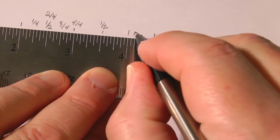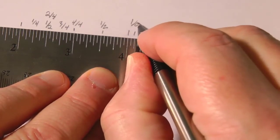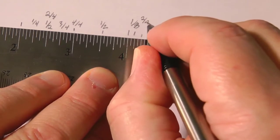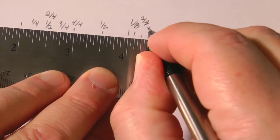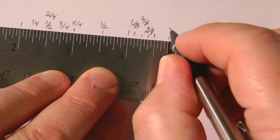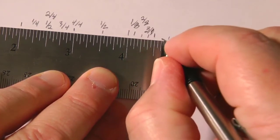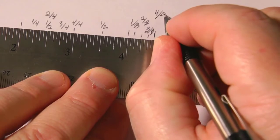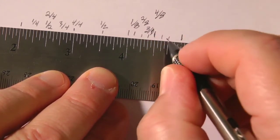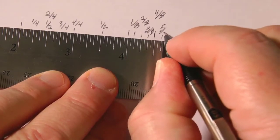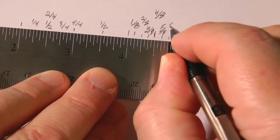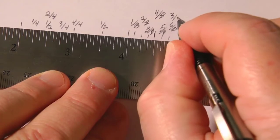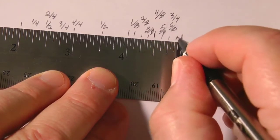So this one here is one eighth. And then we have a quarter, which could also be two eighths. Then we have here three eighths. This is where my handwriting gets sloppy. Here we have four eighths for the half, so four eighths. Here we have five eighths, and six eighths, which is also three quarters.